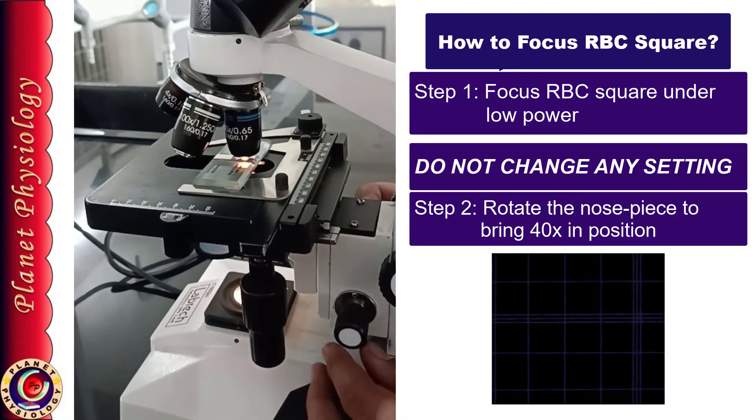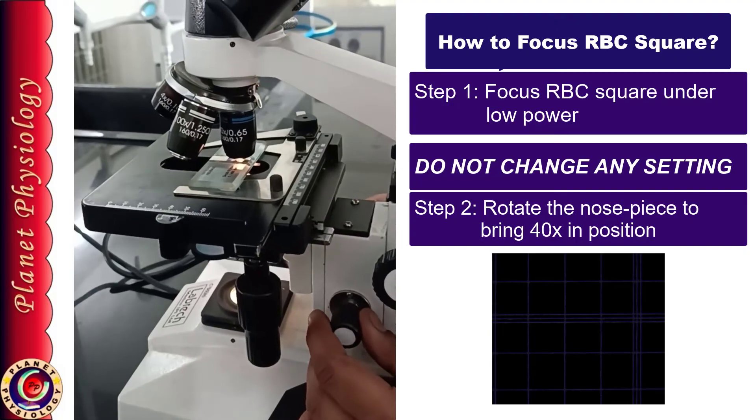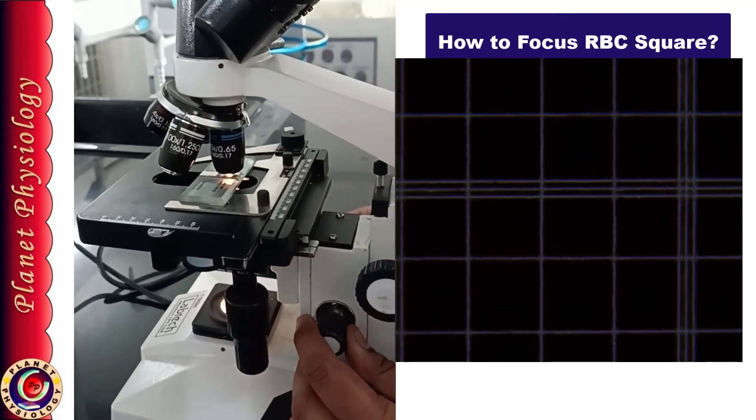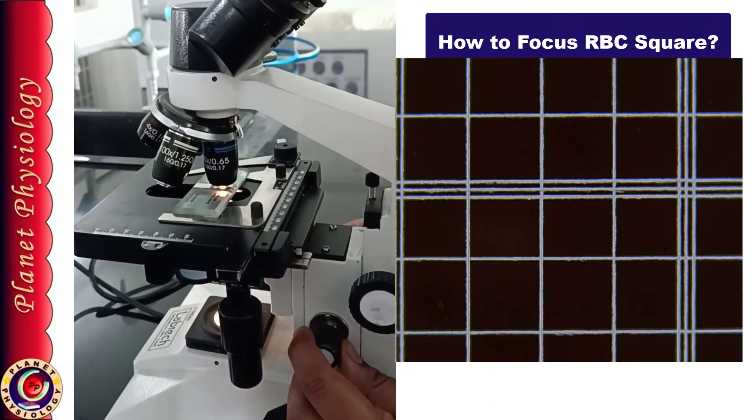So don't bother. Once it is fixed in a proper position, now see through the eyepiece and just do the fine adjustment to bring the grid in clear focus and your job is done.